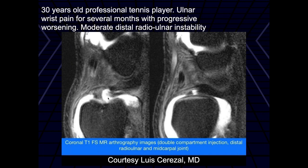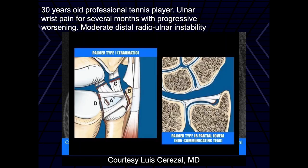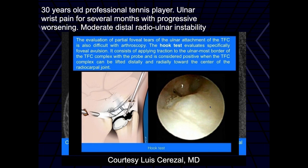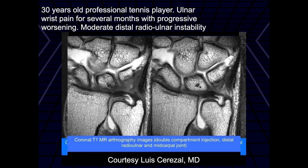Here are the sagittal images — they show that perforation within the TFC. This was an upper laminar tear, which we can classify as kind of a 1B. And then you can see the tear here, a diagram of the tear, and evidence of the tear at arthroscopy.